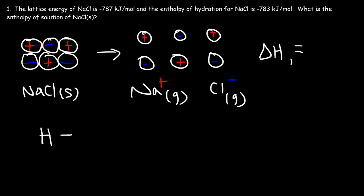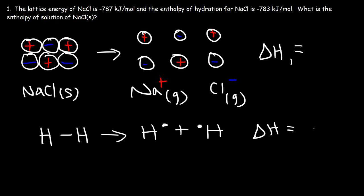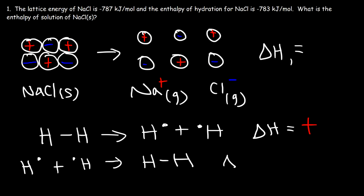To break a bond — let's use hydrogen as an example — you need to separate the atoms from one another. Breaking a bond always requires energy; you've got to put energy into it. So breaking a bond is always an endothermic process and the enthalpy change is positive. Conversely, whenever two atoms come together to form a bond, it's an exothermic process and the enthalpy change is negative.